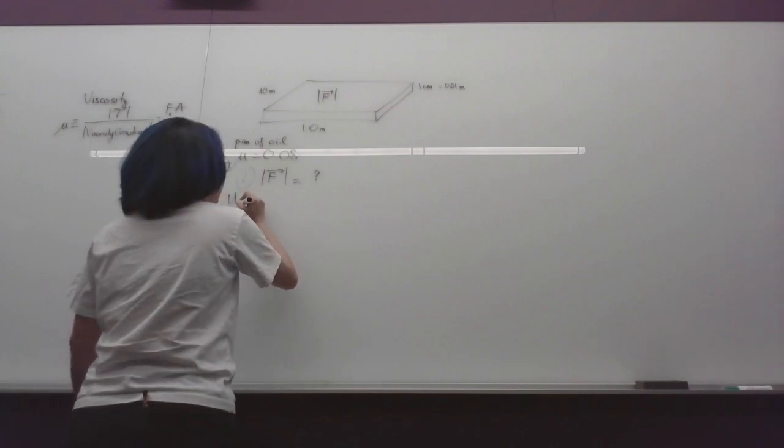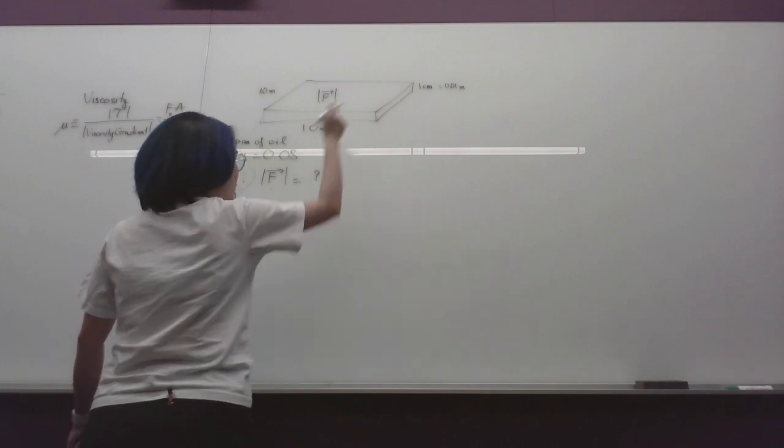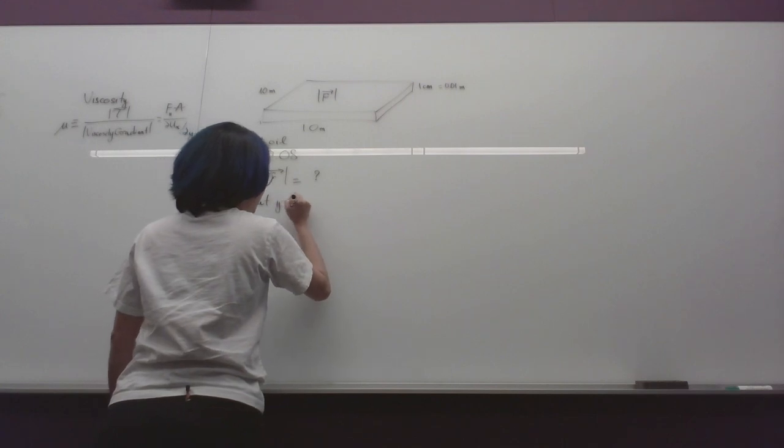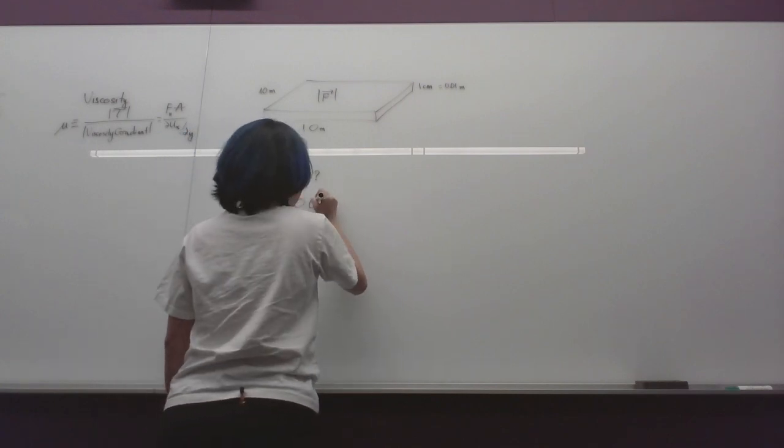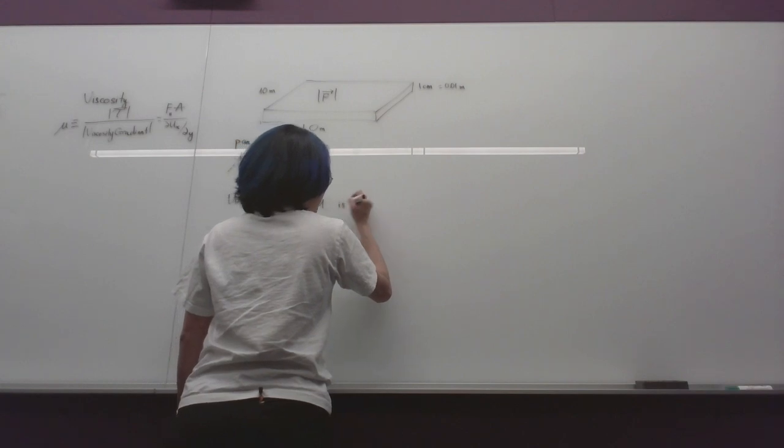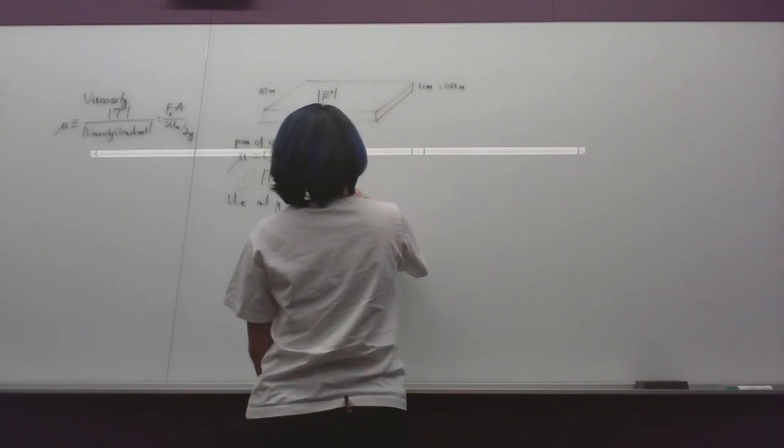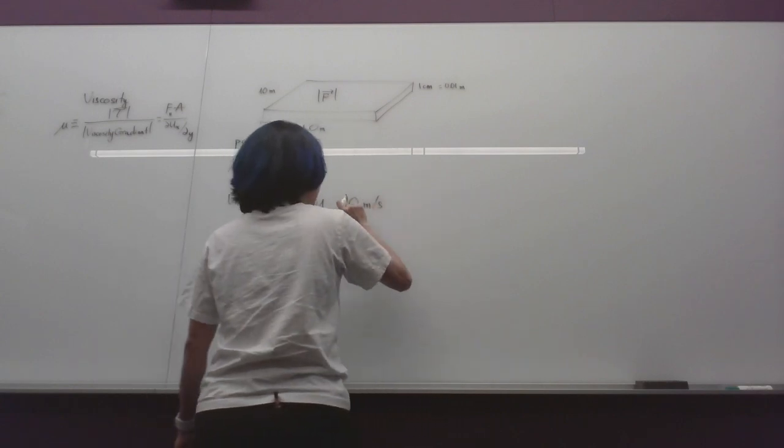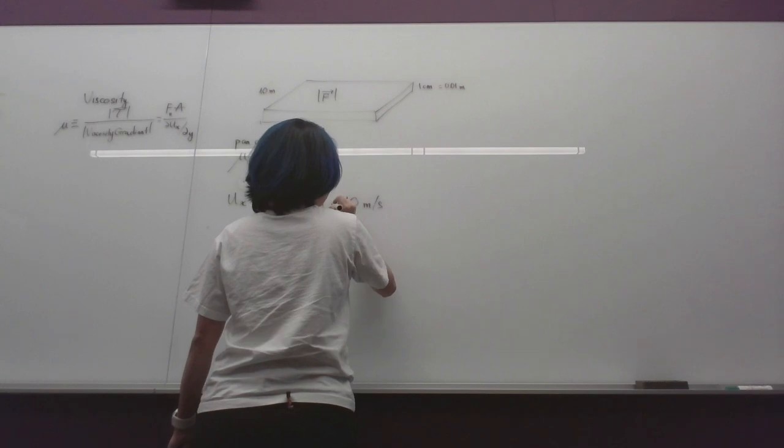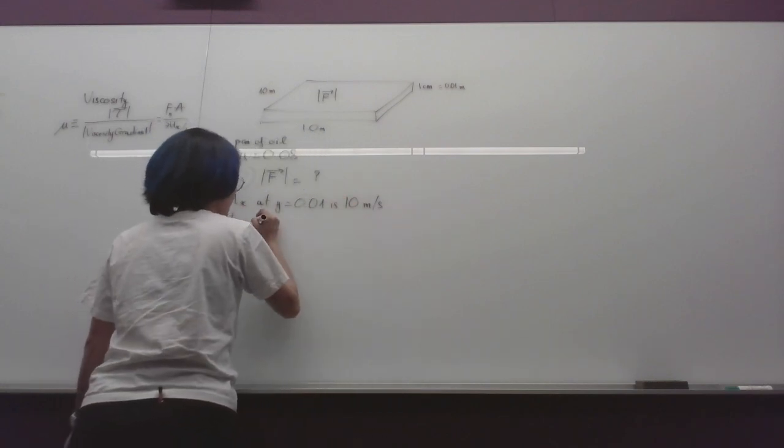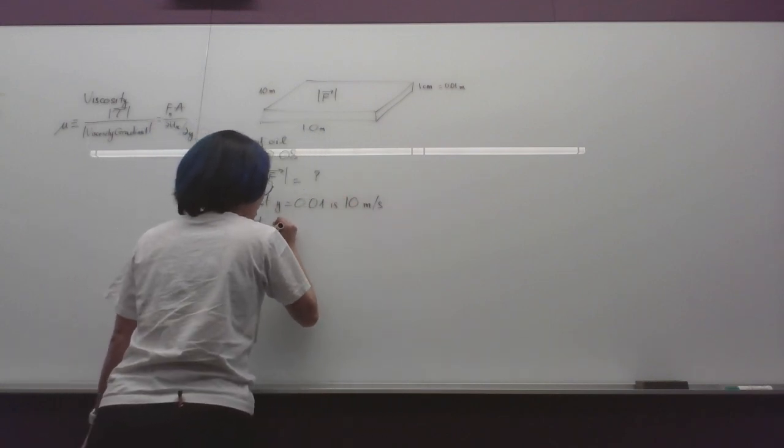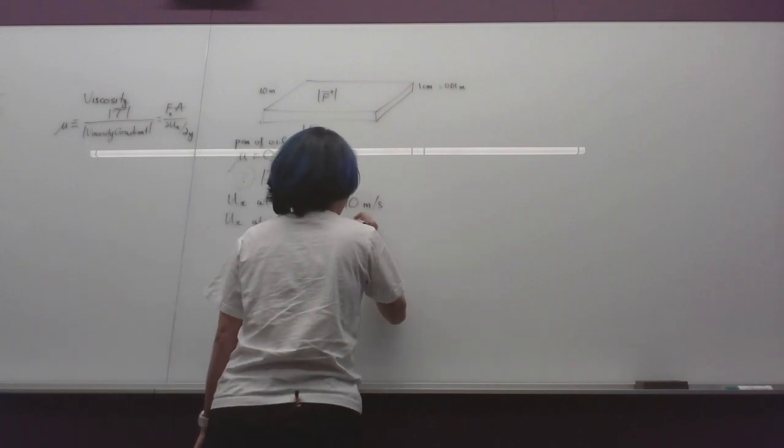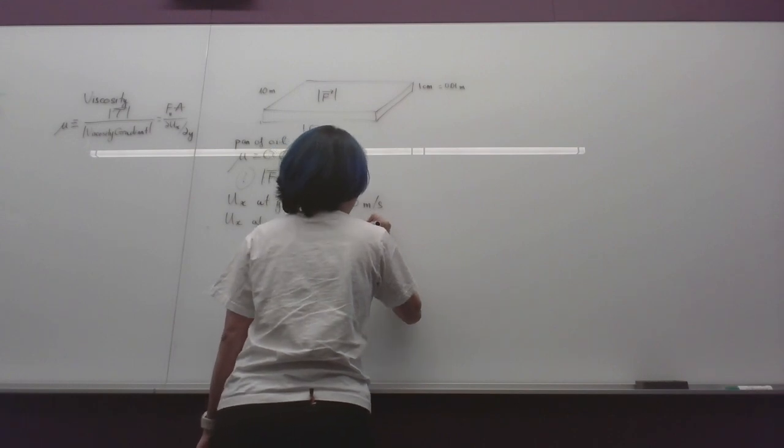With the ux on the surface at y equals 0.01 is 10 meter per second, and the ux at y equal to 0 is 0 meter per second.